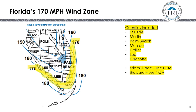The Florida 170-mile-per-hour wind zone for ASCE 7-16 is found on a map in the FRSA TRI 6th edition on page 32. It includes St. Lucie, Martin, Palm Beach, Monroe, Collier, Lee, and Charlotte counties. It also includes Miami-Dade and Broward, but those two counties use the NOA and the RASs.